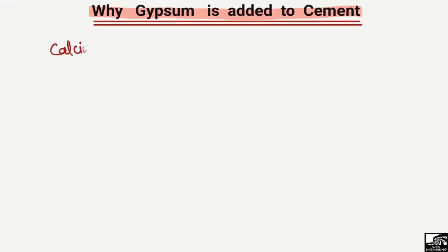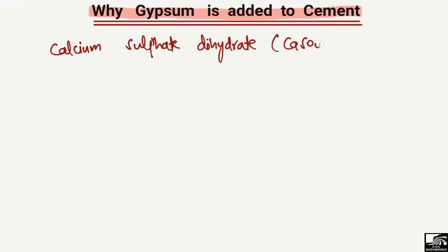Gypsum is basically calcium sulfate dihydrate. This is the general formula for gypsum: CaSO4·2H2O — calcium sulfate with two water molecules. So this is the chemical formula for gypsum.